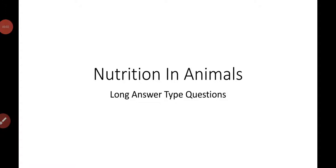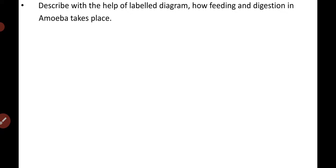Hello Class 7 students, welcome back again. Today this is the last video of the chapter Nutrition and Animals and we are going to discuss some of the long answer type questions. Let's begin. The first question: describe with the help of a labeled diagram how feeding and digestion in amoeba takes place.